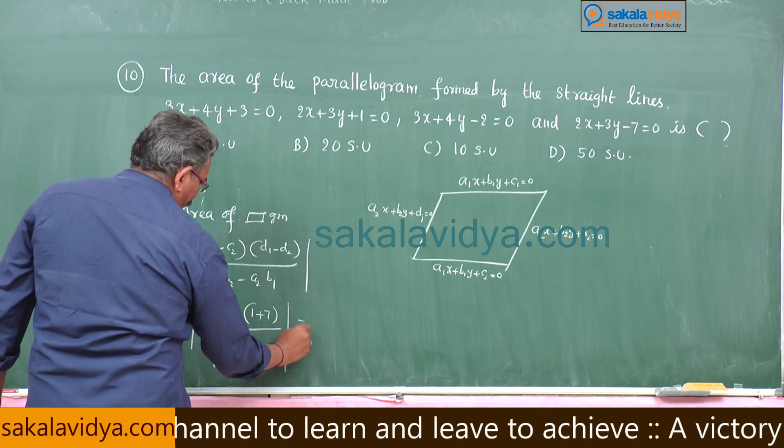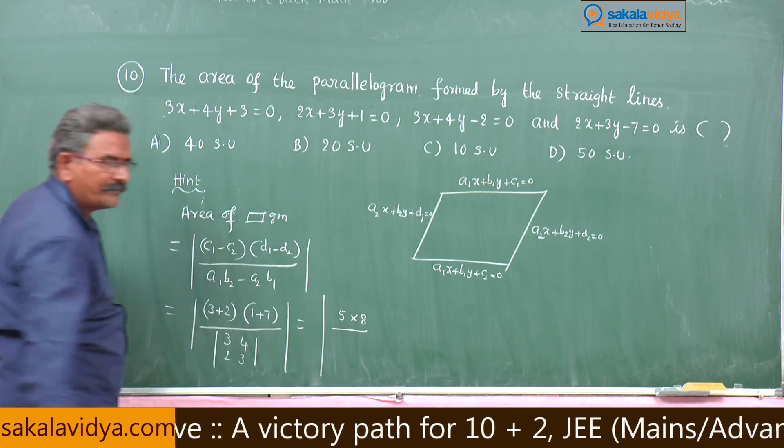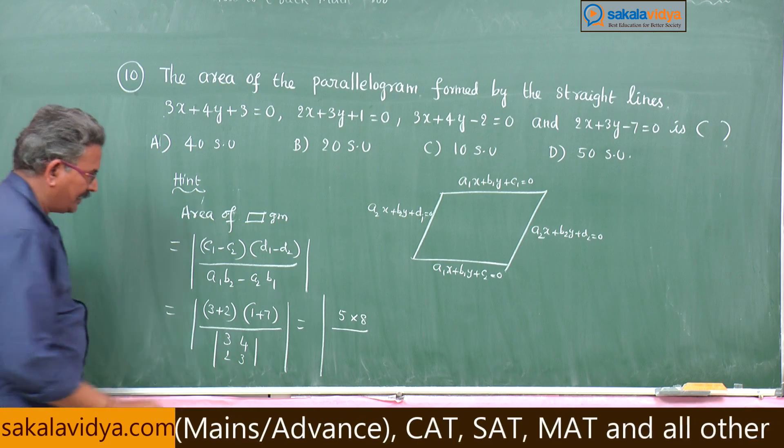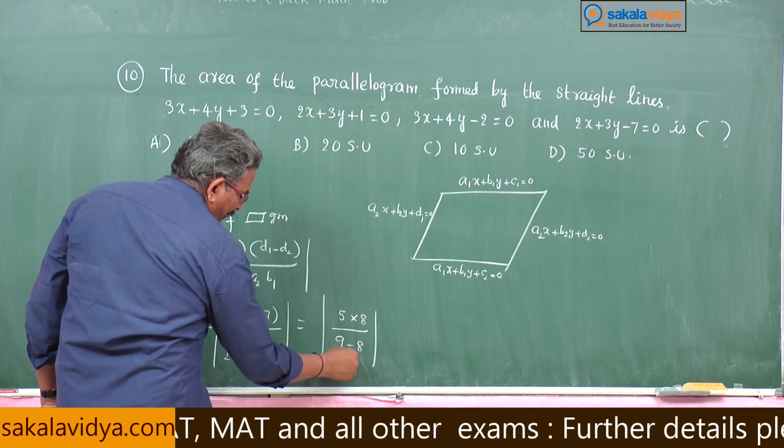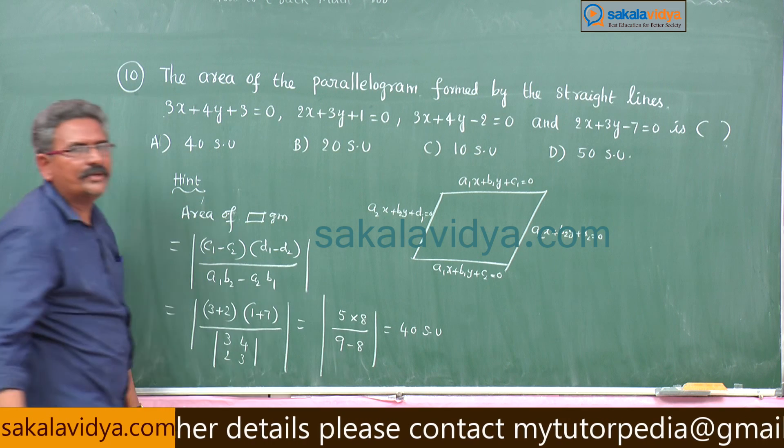So this is equal to 5 into 8 divided by 9 minus 8, which is 1. So 40. The answer is 40 square units.